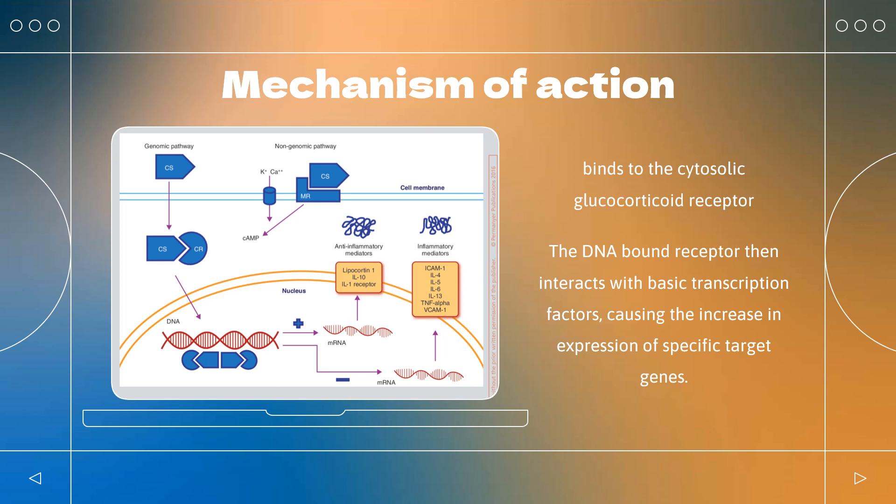Specifically, glucocorticoids induce lipocortin-1 and annexin-1 synthesis, which then binds to cell membranes, preventing the phospholipase A2 from coming into contact with its substrate arachidonic acid. This leads to diminished eicosanoid production.